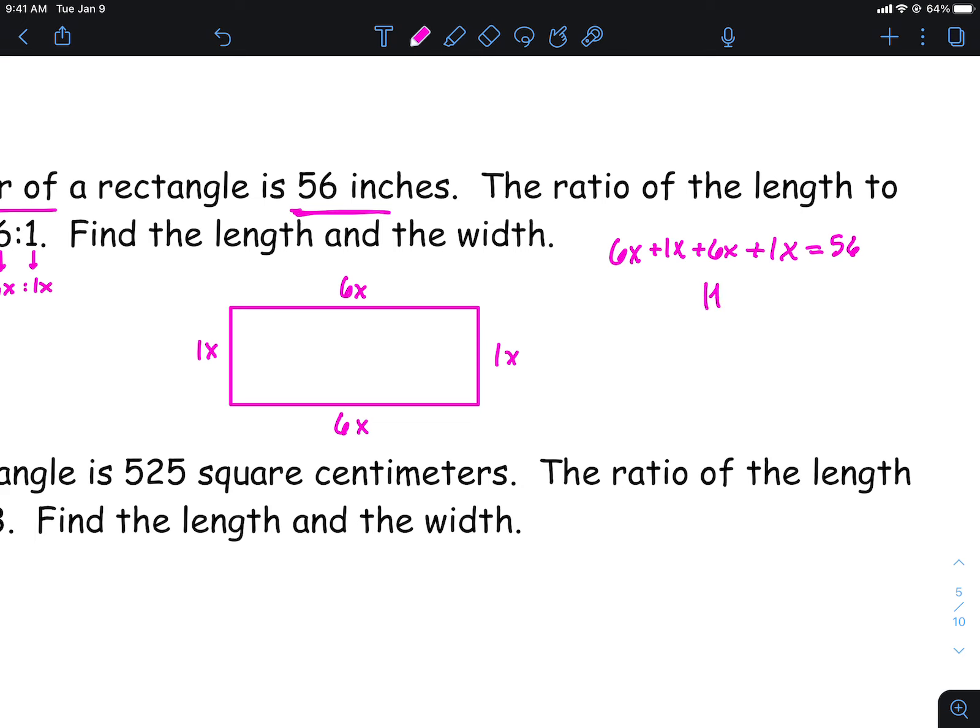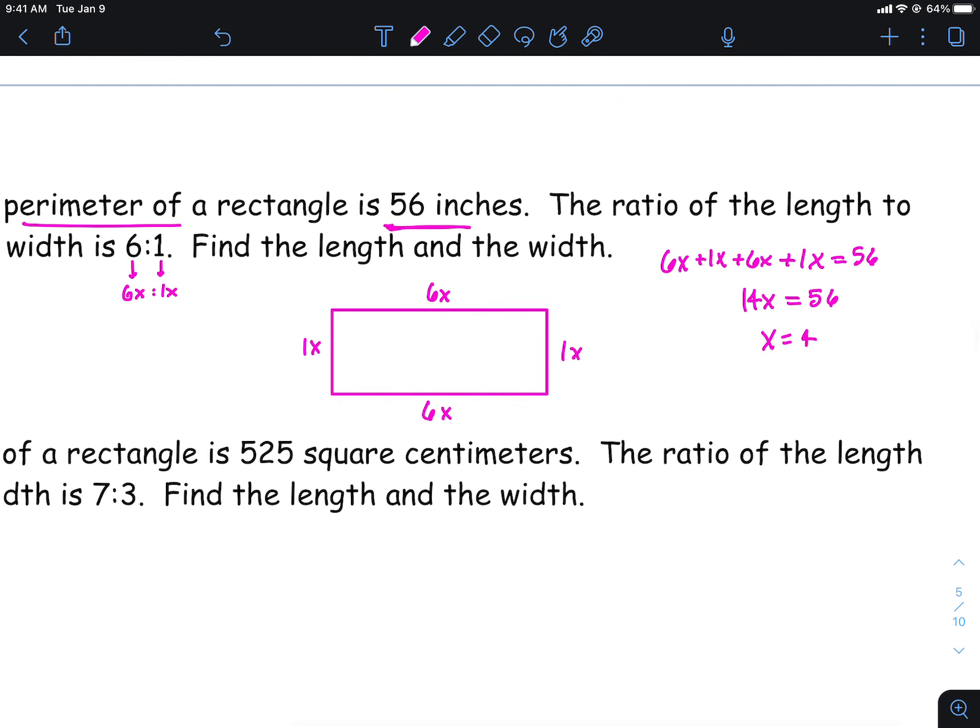Okay, and then from there, then you can go and combine up your like terms. So you've got 14x equals 56, and then we can do some division here. I think that's maybe like four times, maybe. Yep, that'll be x is four. Now that's technically not the answer. That is what your scale that you need to multiply with right there.